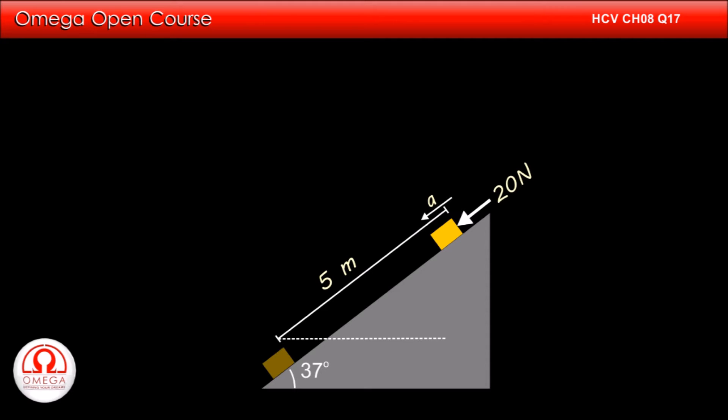Since the angle of inclination is 37 degrees, the displacement of the block in the vertical direction is 5 sin 37° or 3 meters. Therefore, the work done by the gravitational force, that is weight of the block, is 2 × 10 × 3 or 60 joules. This is the answer to part B of the question.